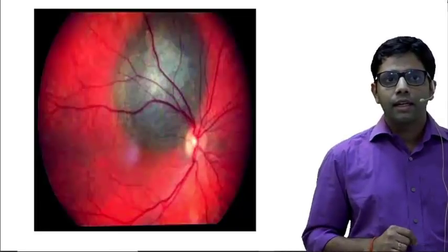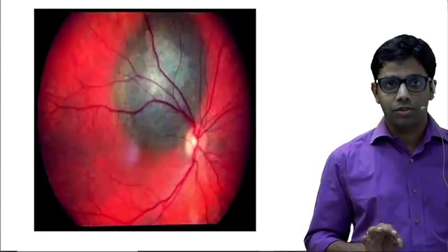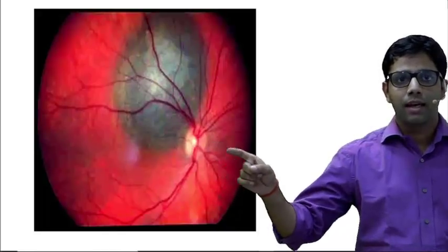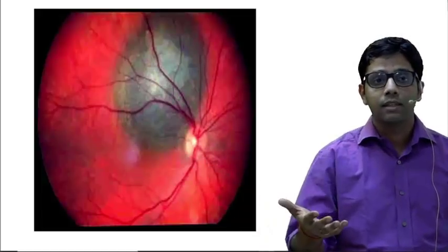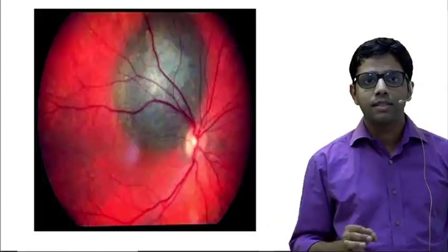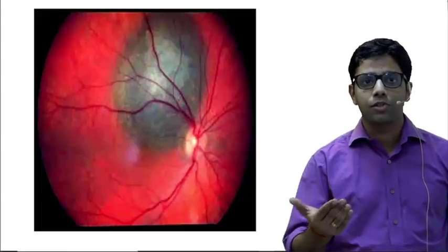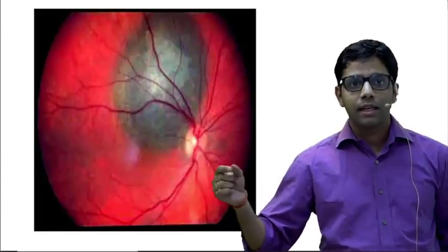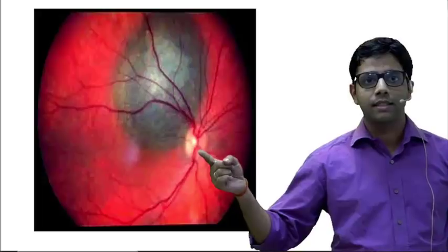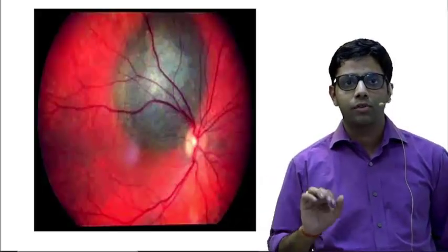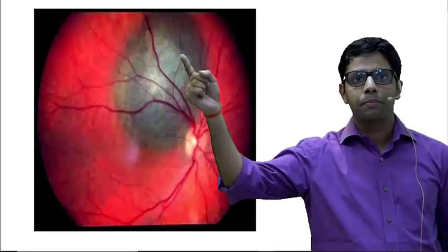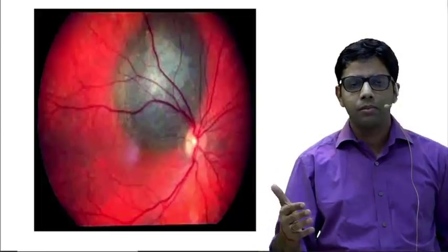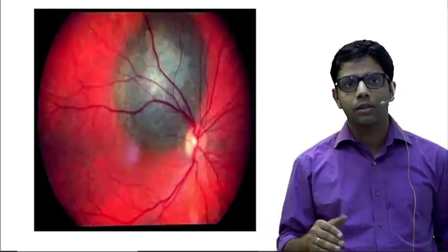This is the fundus photography picture of the right eye. How do we know this is the right eye? This is the optic disc and this is the fovea. In ophthalmology, if an image is given, always imagine the patient is standing face-to-face towards you. The fovea is always temporal. In this eye, the optic disc is nasal and the fovea is temporal, so this is the right eye. We can see a big round mass in the retina or possibly behind it.